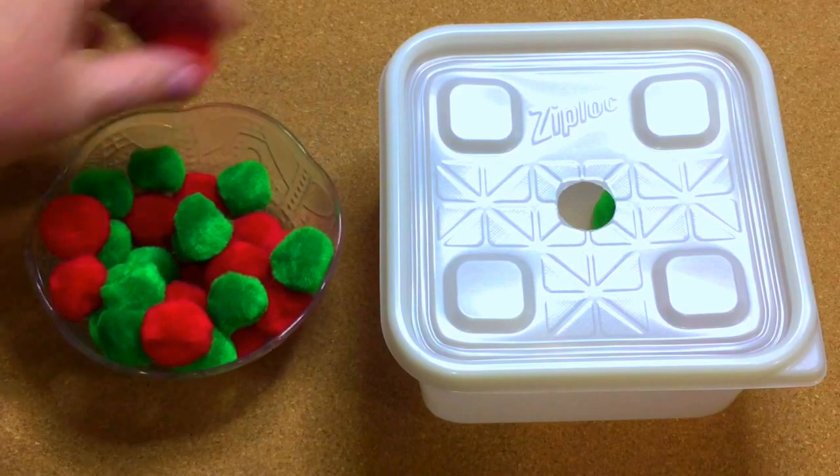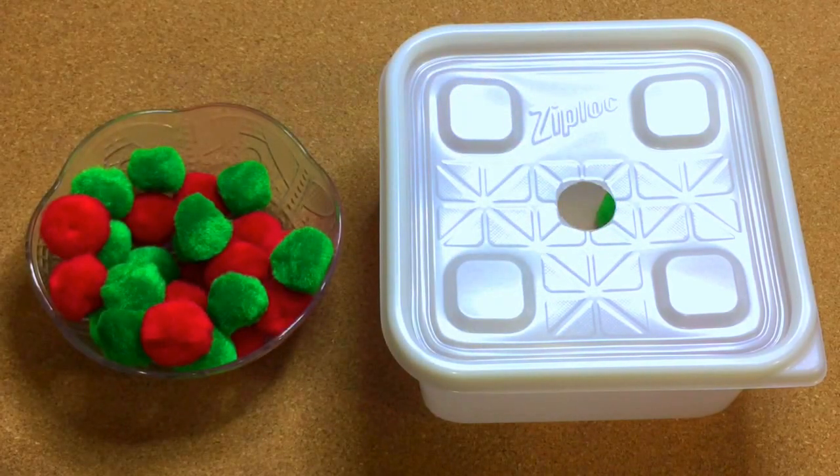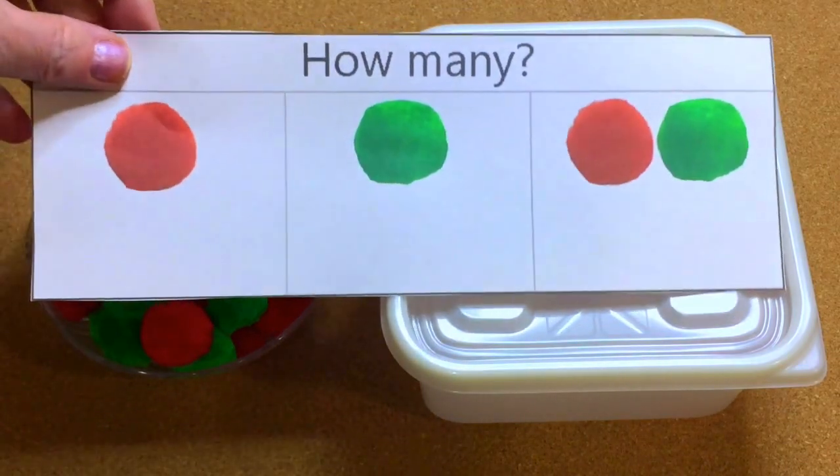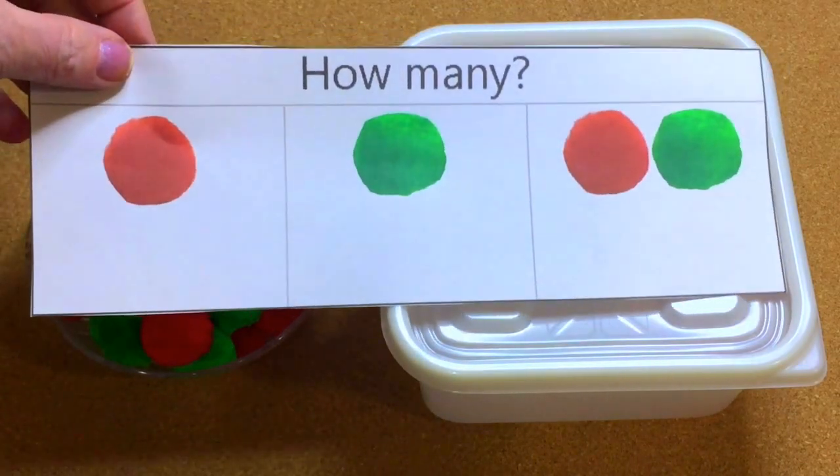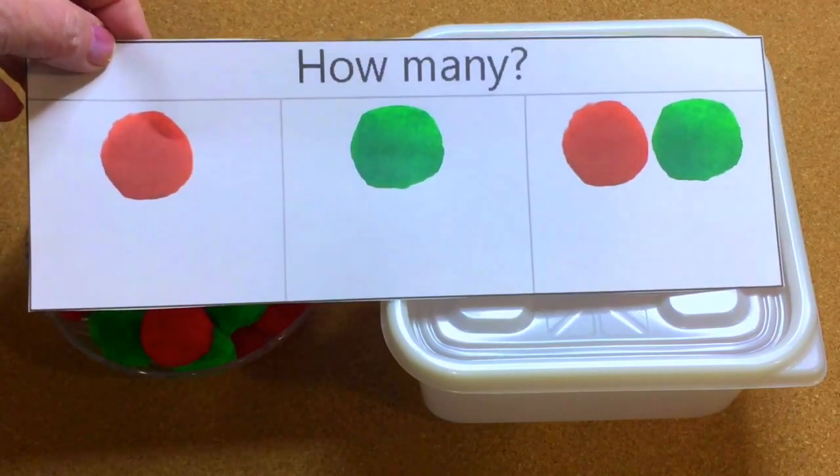So make sure if you're going to do the counting sheet where they record the number of pom-poms for the red, the green, and then the both the red and the green. Kind of a sneaky way of sneaking addition into this activity.